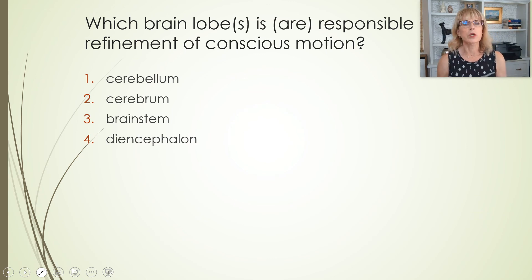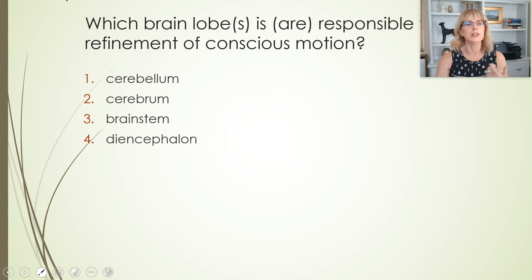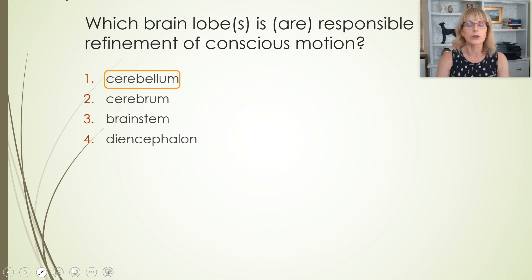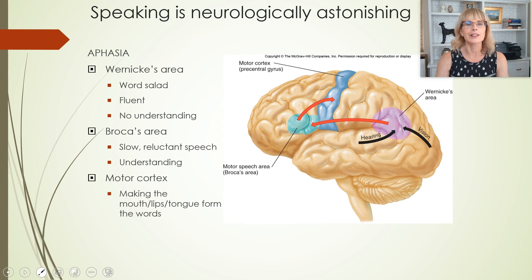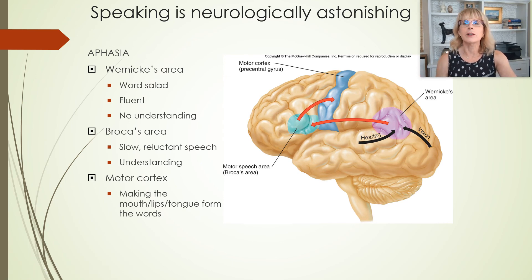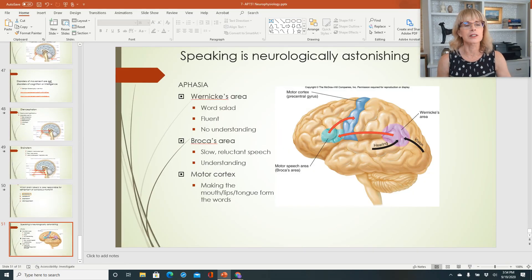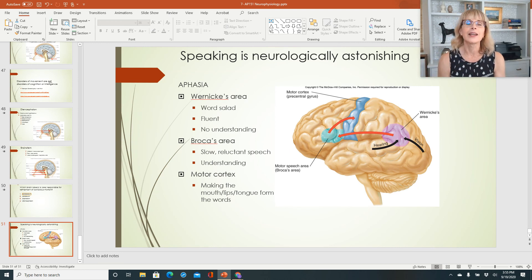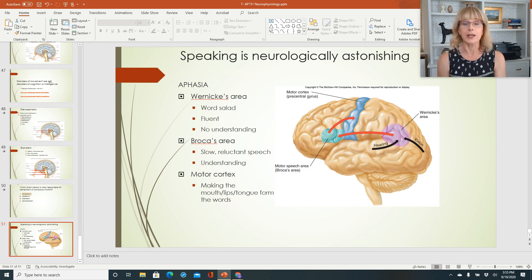Which brain structure is responsible for the refinement of conscious motion? Pause me because I'm about to tell you. It's the cerebellum — that was little Gordon the cat. I won't be talking about aphasia because it's not on the exam, but it's fascinating. I will see you when you start preparing for exam three.